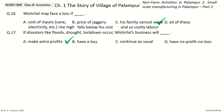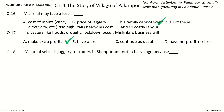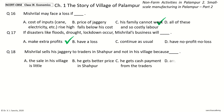Question 18 — the last question: Mishrilal sells his Jogari to traders in Shahapur and not in his village because dash. Options: The sale in his village is little; He gets better price in Shahapur; He gets cash payment from the traders; Any of these. The answer is Any of these — the sale in his village is little, or he gets a better price in Shahapur, or he gets cash payment from the traders.